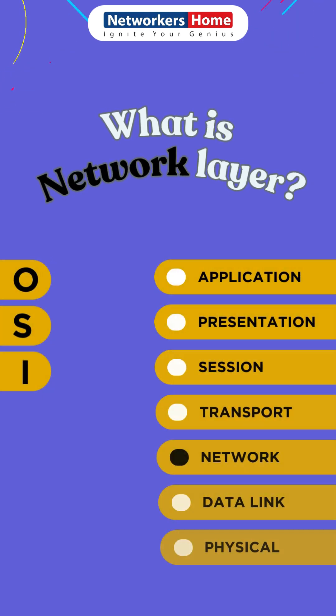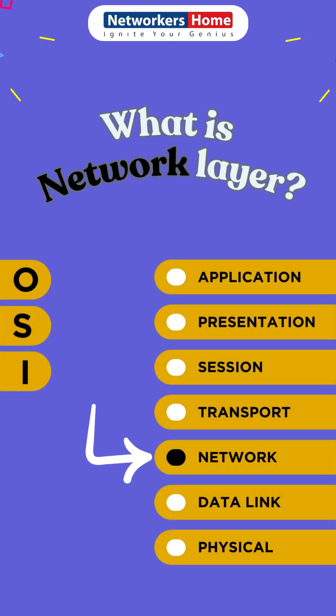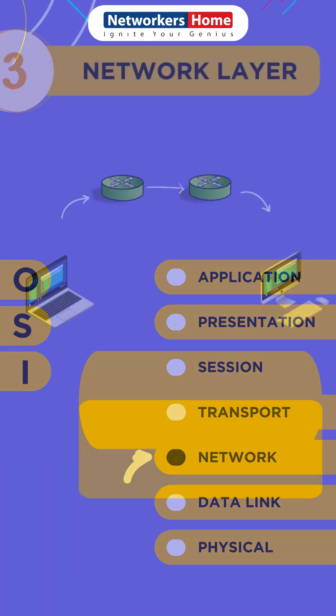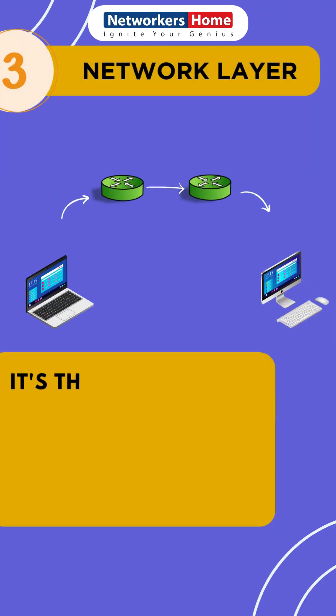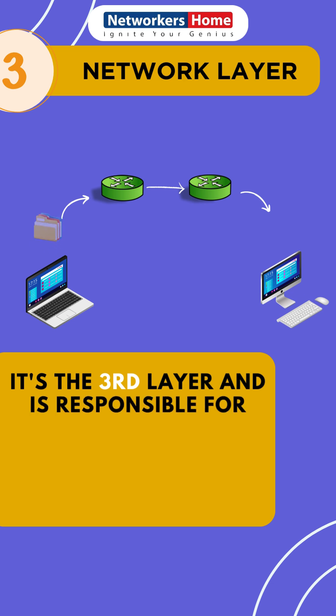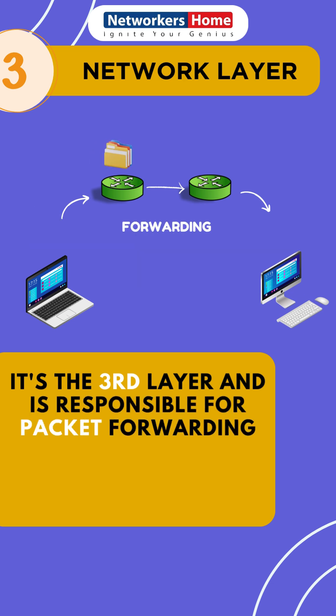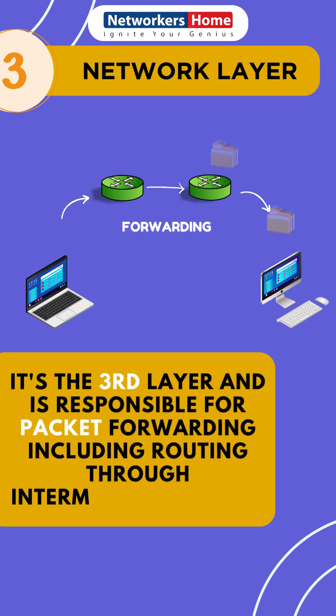Let's talk about the network layer in the OSI model. It's the third layer and is responsible for packet forwarding, including routing through intermediate routers.